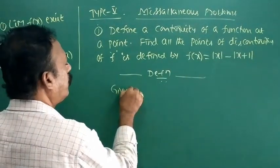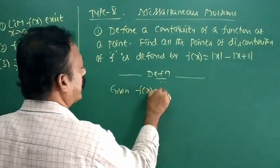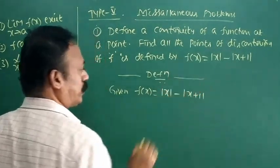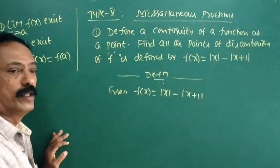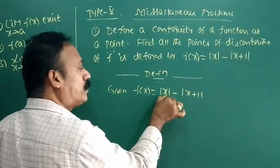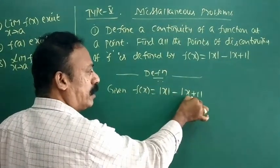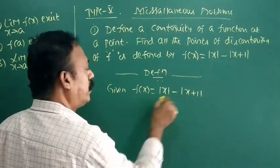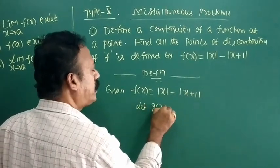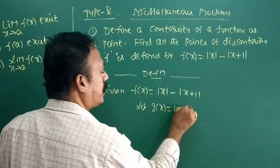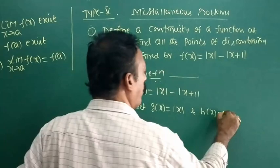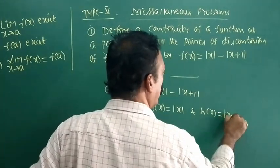Given f of x is equal to mod x minus modulus of x plus 1. Now consider: let g of x equal mod x, and h of x equal modulus of x plus 1.